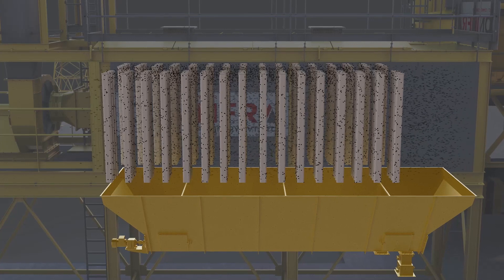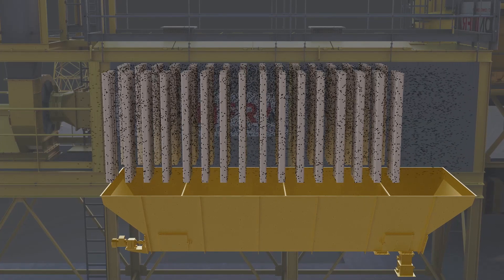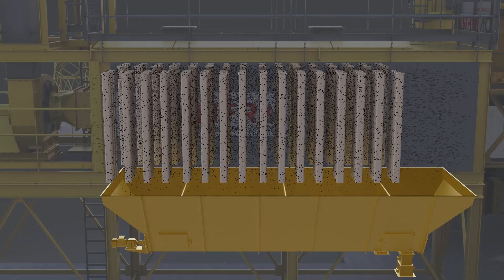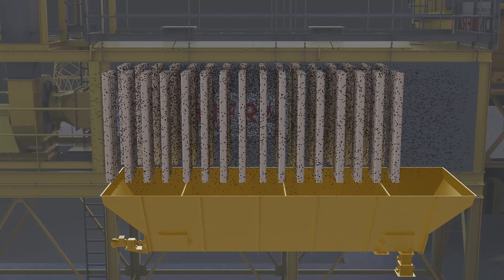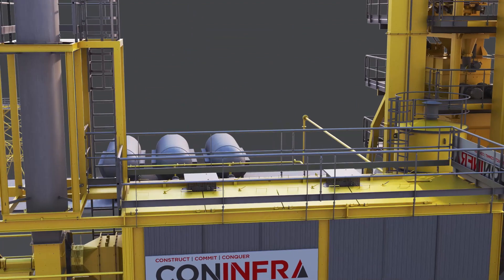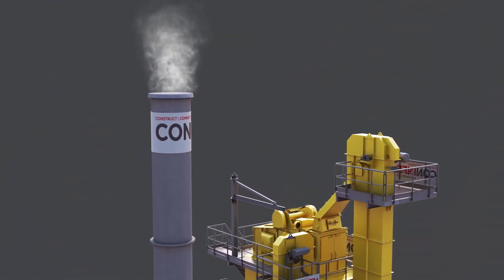Heavy particles are separated in the pre-separator area, then allowed to pass through a series of bags. With the help of an induced draft system, finer particles accumulate on the bags while clean air passes through and is released into the atmosphere.